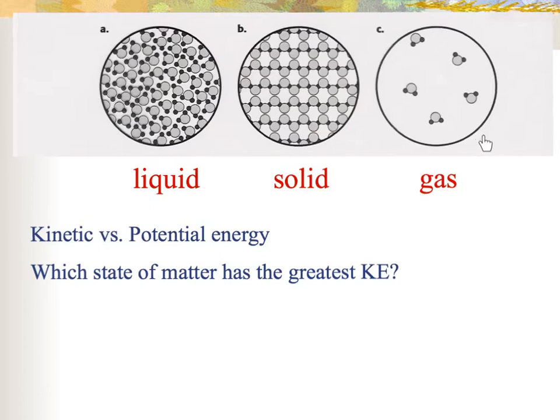This last picture over here represents a gas. Gas particles are bouncing around all over the place — they're bouncing off the walls. They're able to move around freely and they're all over the place.